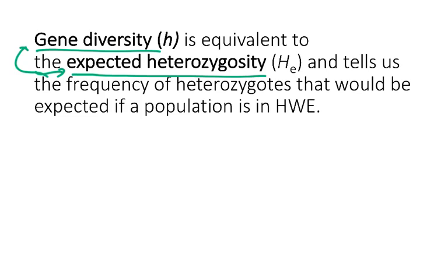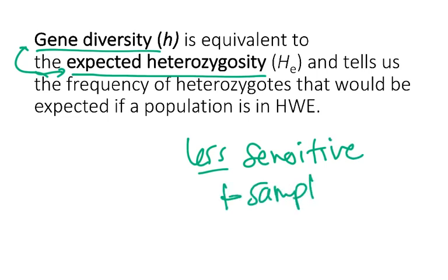Gene diversity tells you the frequency of heterozygotes that would be expected if a population is in Hardy-Weinberg equilibrium. Using those equations where you take allele frequencies and calculate genotype frequencies, that is what this gene diversity metric tells you. Importantly, this is less sensitive to sampling size. So if you were given an option for heterozygosity metrics, expected heterozygosity or gene diversity is better than observed heterozygosity because it's not sensitive to sampling size differences.